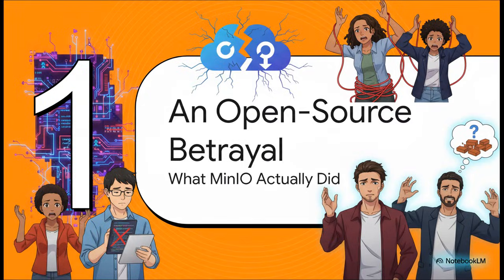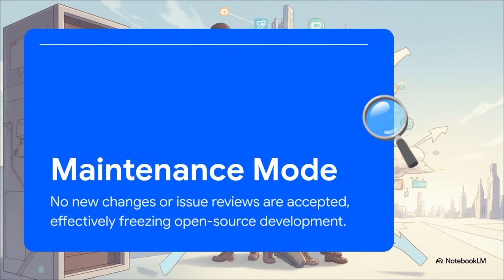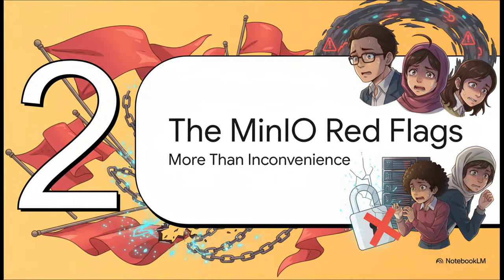So, what did MinIO actually do? To really get why everyone's so frustrated, we've got to look at the specific change they made and why it hit the community so hard. MinIO announced on their GitHub that the public open-source repository was going into maintenance mode. That means no more new community changes, no more reviews of issues. For all intents and purposes, active development on the open-source version we all knew was over. And this wasn't just some small hiccup — it immediately created serious, tangible risks for anyone relying on the open-source version for anything even remotely important.